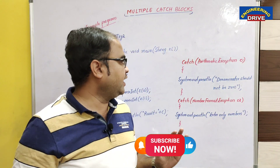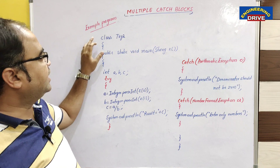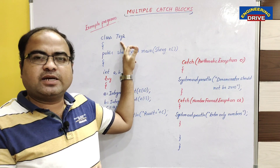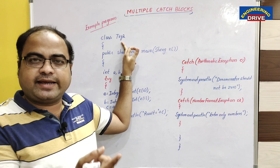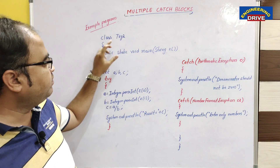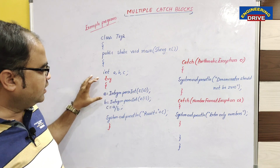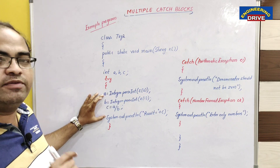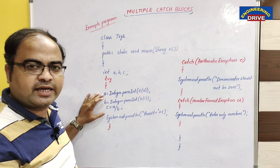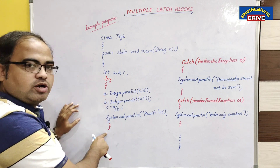Here I have written one simple Java program and the name of the class is try2, as it is our second example program. The first example program based on try and catch block was discussed in my previous video. In this try2 program, I have taken three variables: a, b, and c. This is the code where I am expecting that a runtime error — or more than one runtime error — can occur, so I have kept it inside a try block.